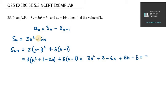When you solve this, you will get 3n squared minus n minus 2. So this is my Sn minus 1.